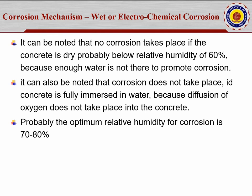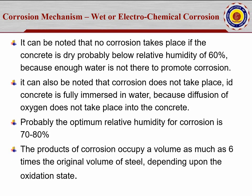The product of corrosion occupies a volume as much as six times the original volume of steel, depending upon the oxidation state. In some project photos you may see that rods which were previously around 8 mm in the ties, when broken show not even 2 mm remaining — so that much corrosion has taken place depending upon the increase in the oxygen amount.